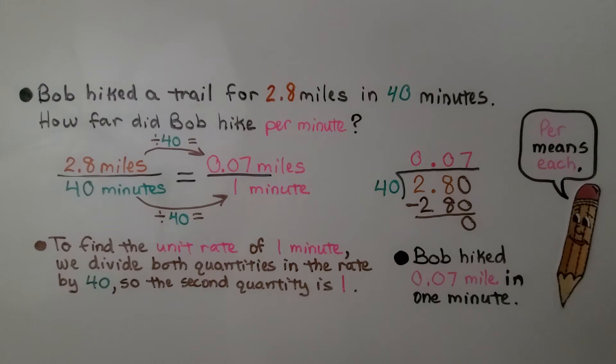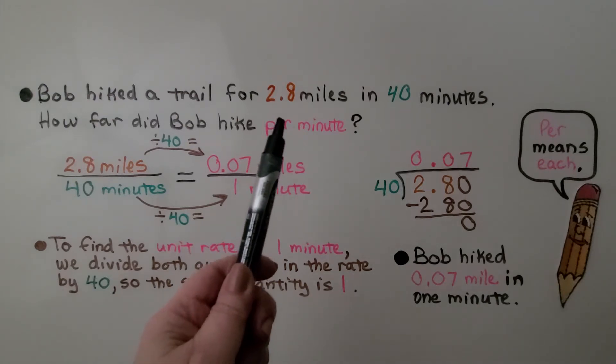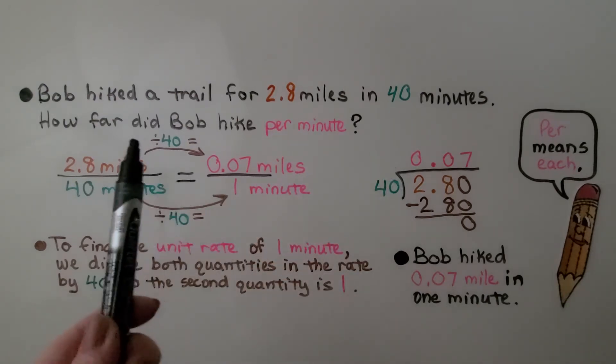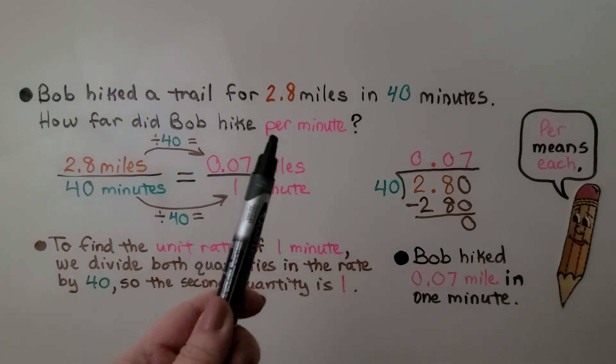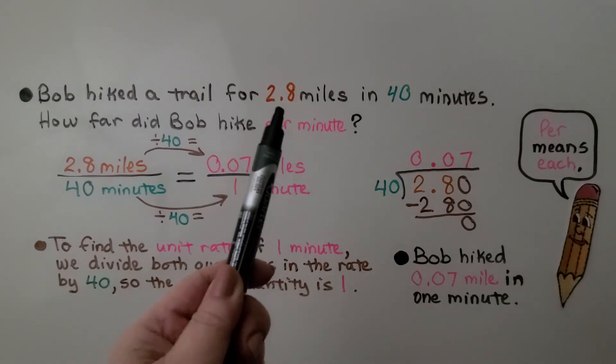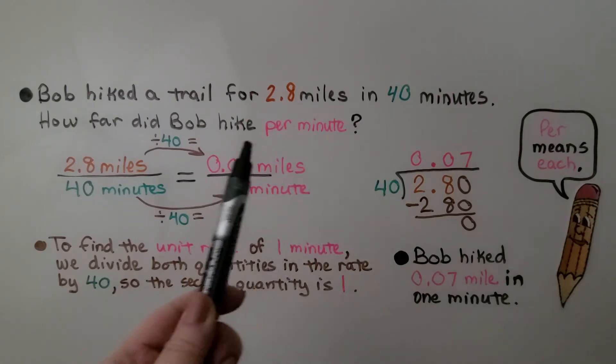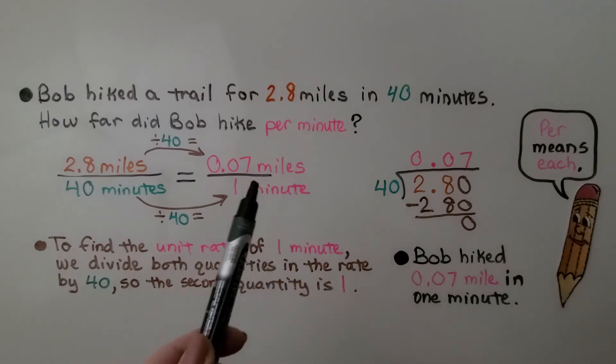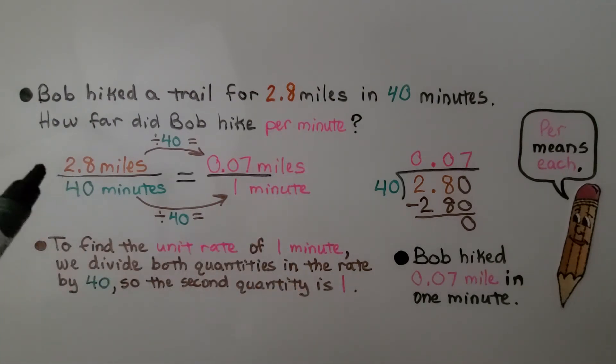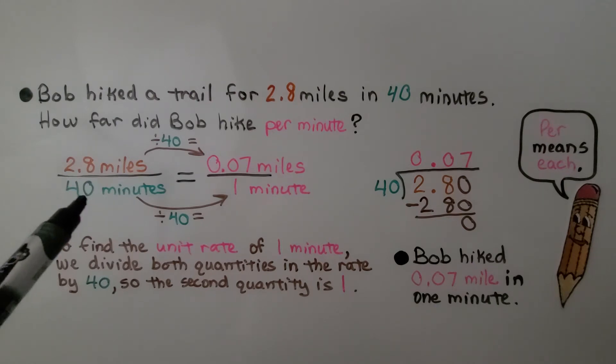Bob hiked a trail for 2.8 miles in 40 minutes. How far did Bob hike per minute? So we know how far he went in 40 minutes. We need to find per minute. That means one minute. Our rate is 2.8 miles in 40 minutes. We can divide 2.8 by 40.